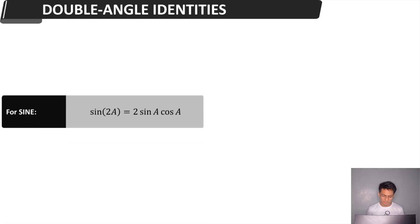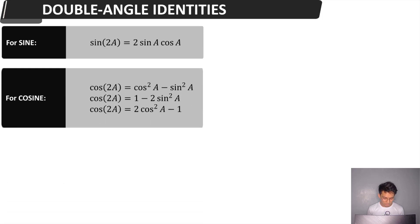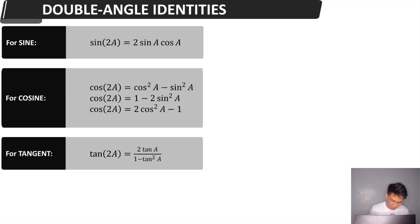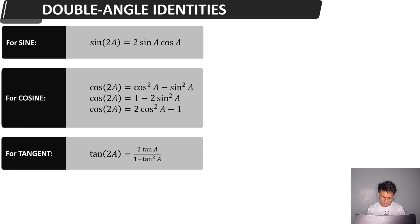We have three sets of formulas for double angle identities: for sine, cosine, and tangent function. For the sine function, sine 2A is equal to 2 sine A cosine A. For the cosine function, we have three forms: cosine 2A equals cosine squared A minus sine squared A; cosine 2A equals 1 minus 2 sine squared A; or 2 cosine squared A minus 1. For the tangent function, tangent 2A equals 2 tangent A over 1 minus tangent squared A.